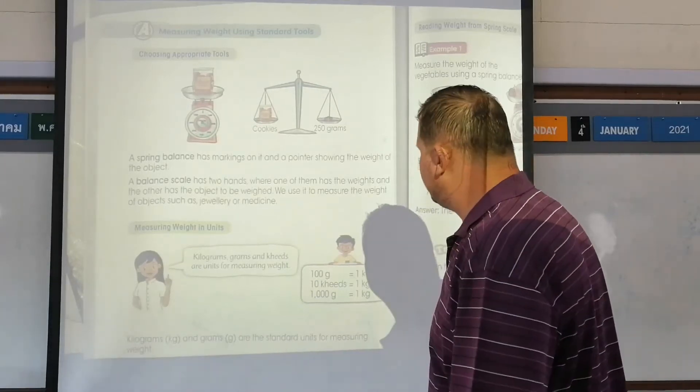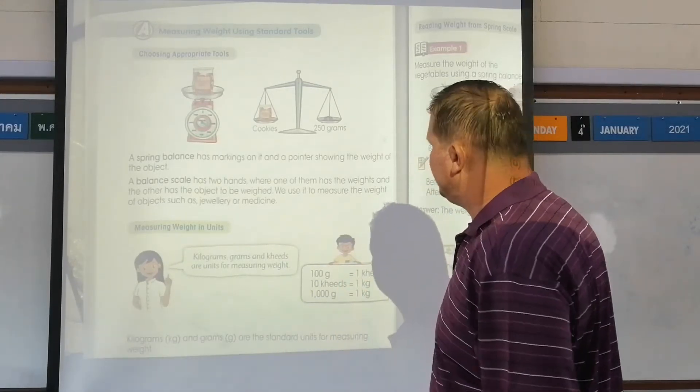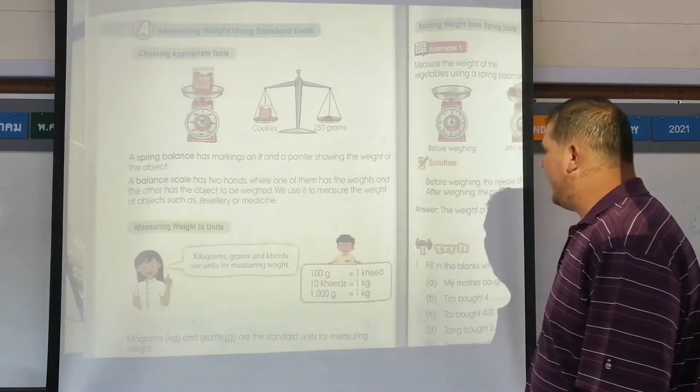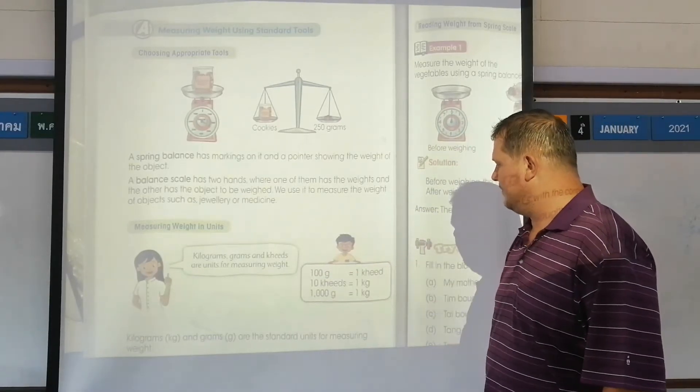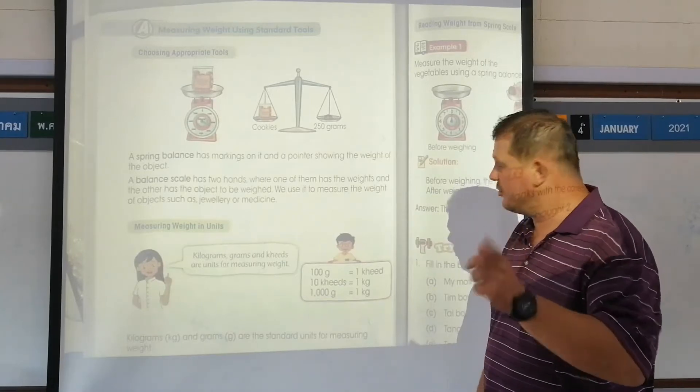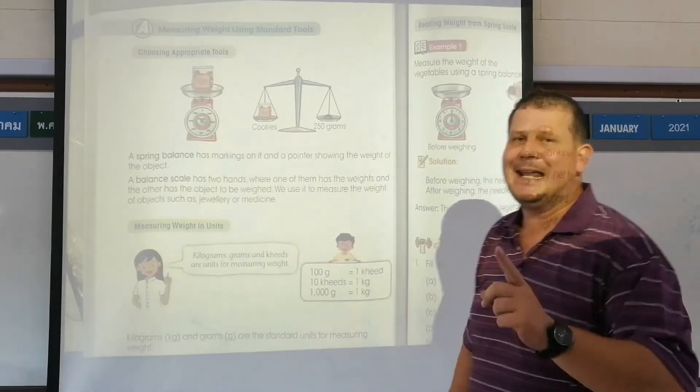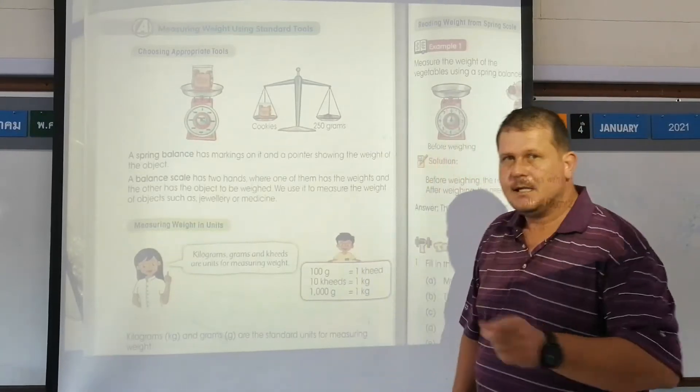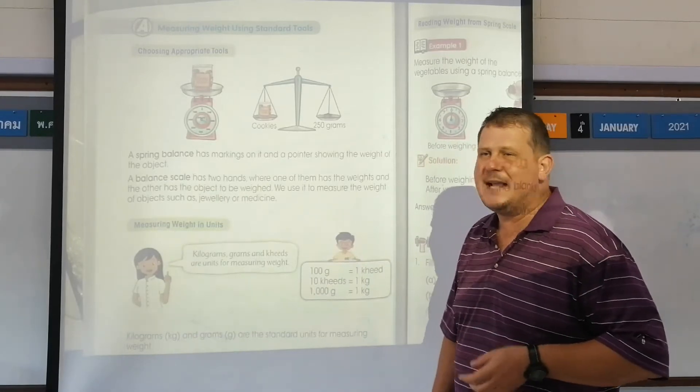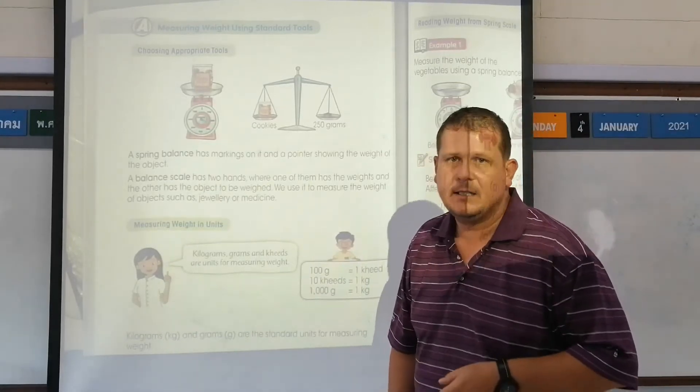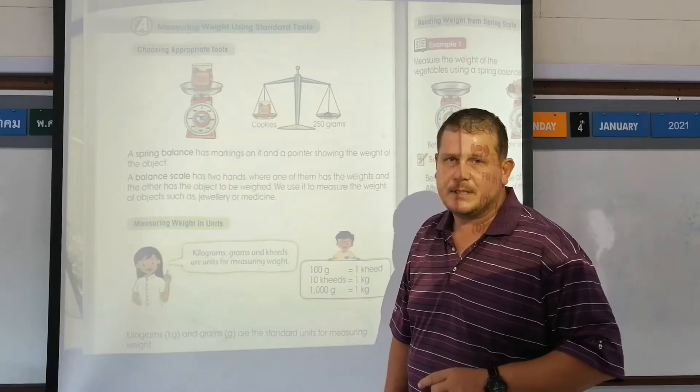Measuring weight in units. Kilograms, grams, and kids are units for measuring weight. 100 grams is one kid. So if someone asks you how much it weighs, you say it weighs one kid, that means it weighs 100 grams.